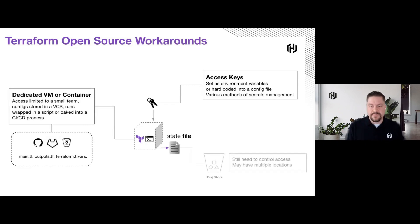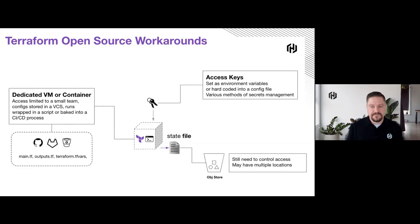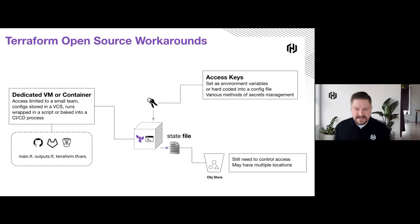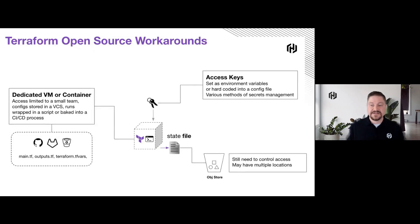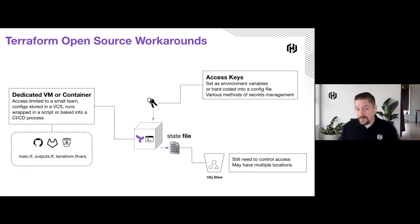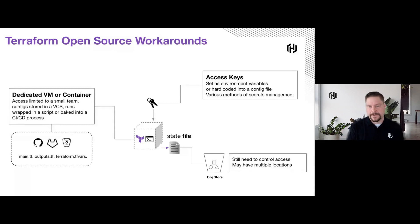We also have to figure out how to deal with state files — this is still a problem. Maybe we put them on an object store and encrypt them, but transparent encryption is transparent decryption, which means that someone with access to your network can get to them and read them. We know they contain sensitive data, and as we scale out and have these state files in multiple locations, that attack surface actually becomes a little bit wider.